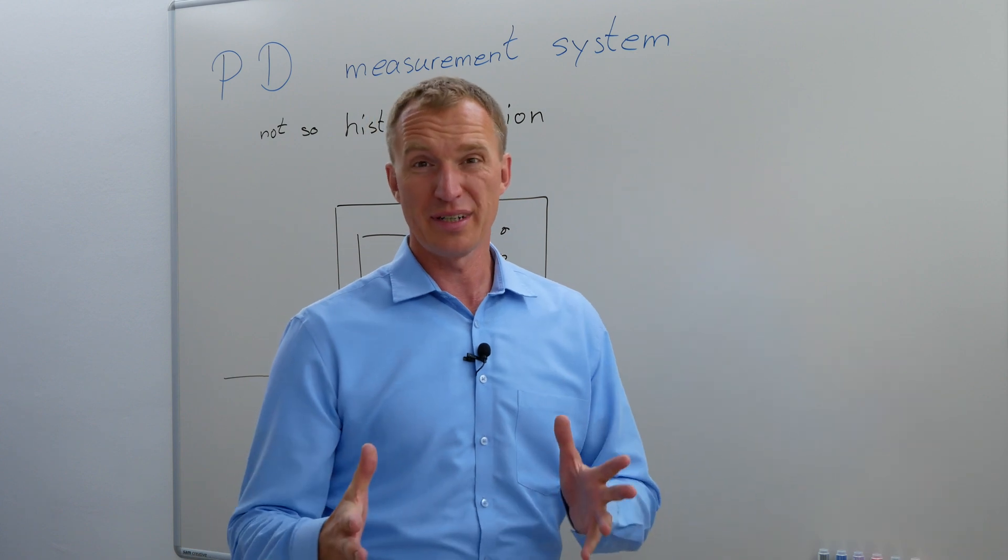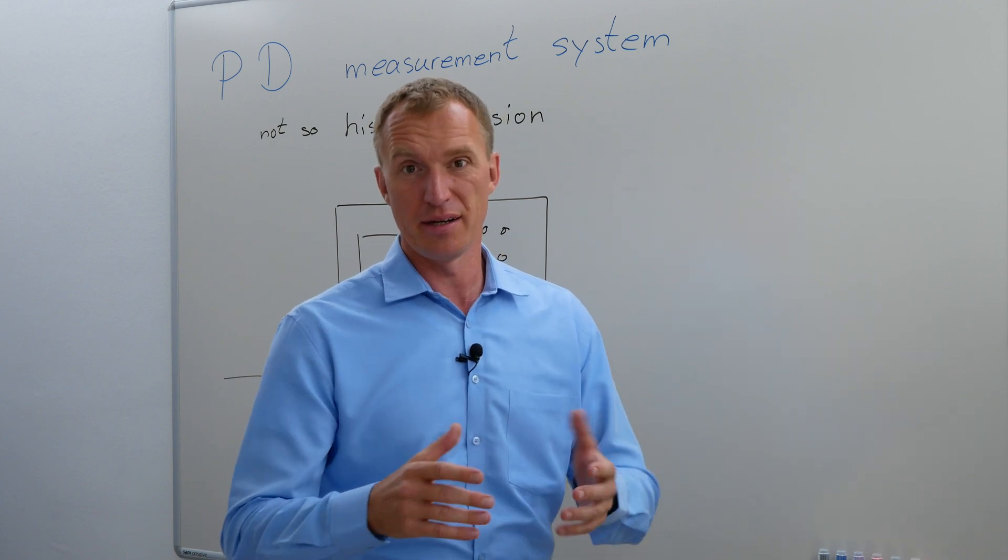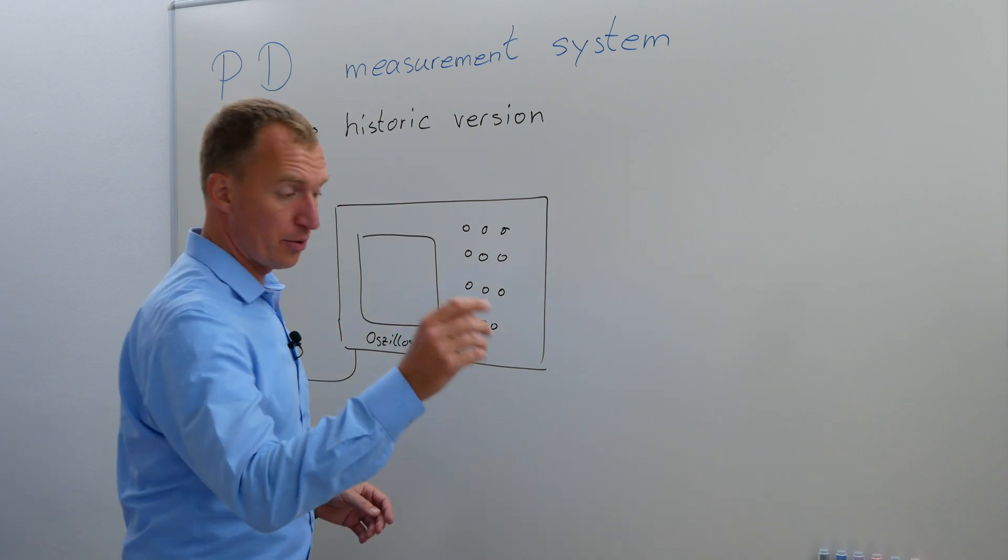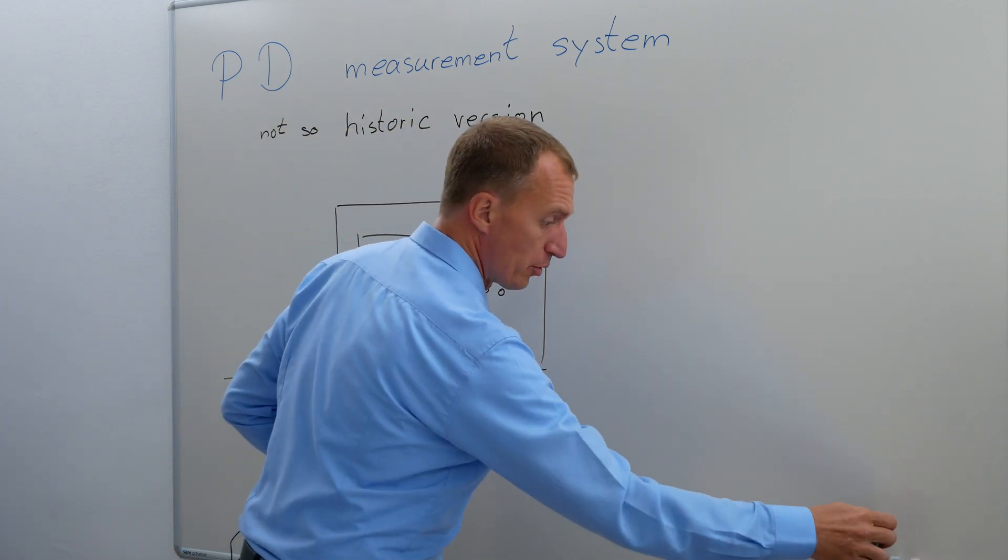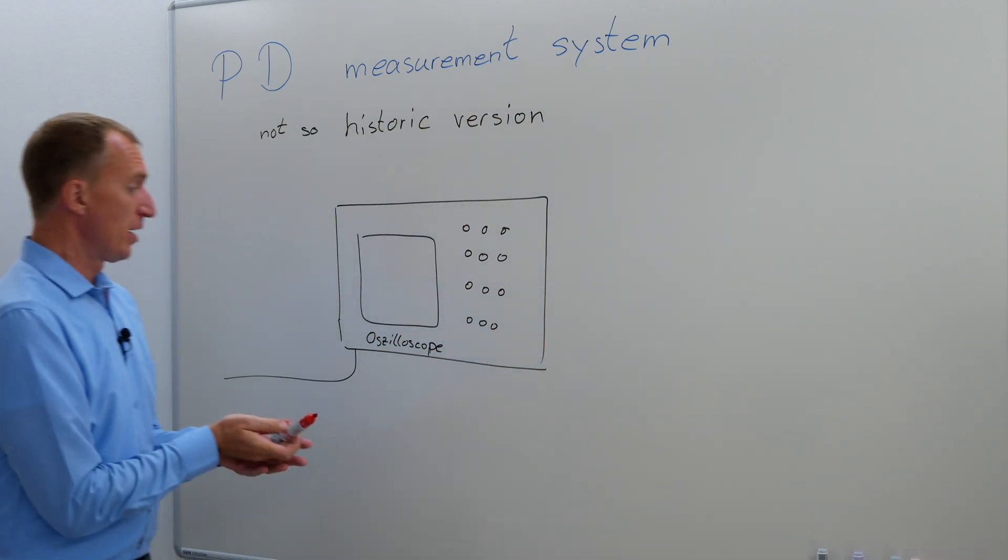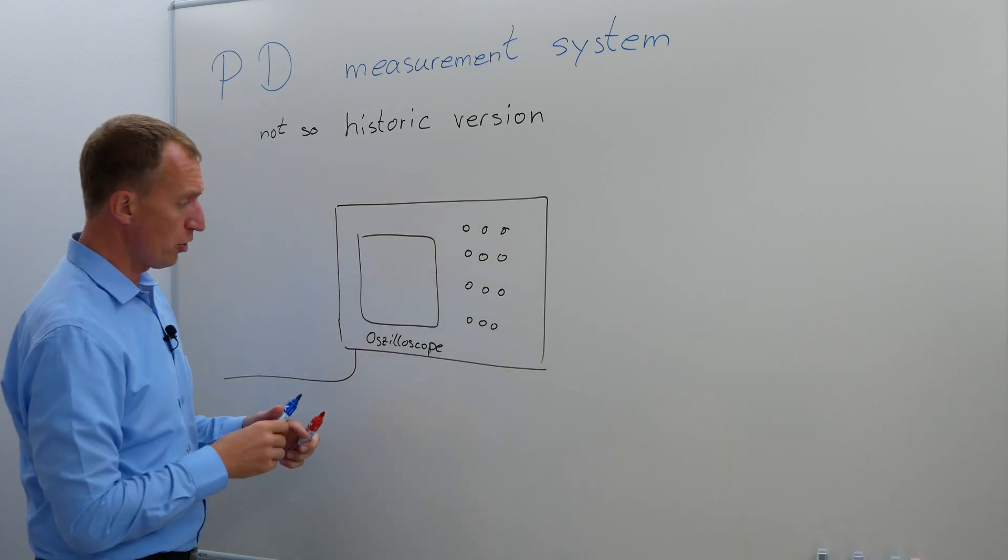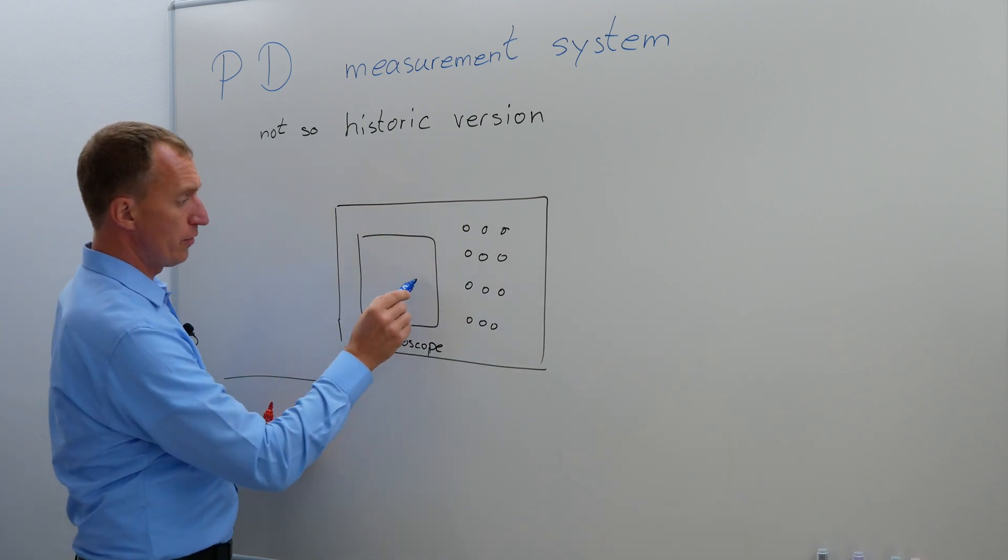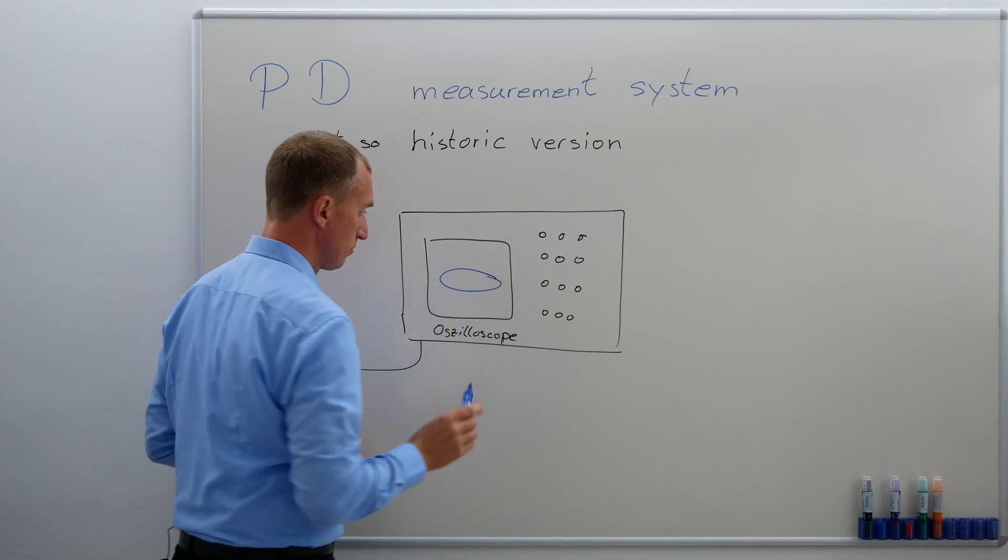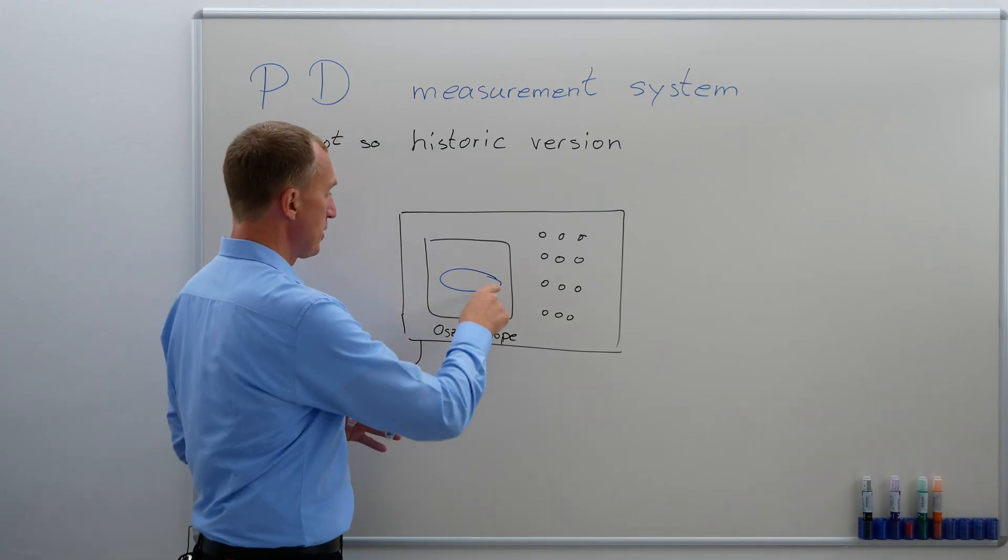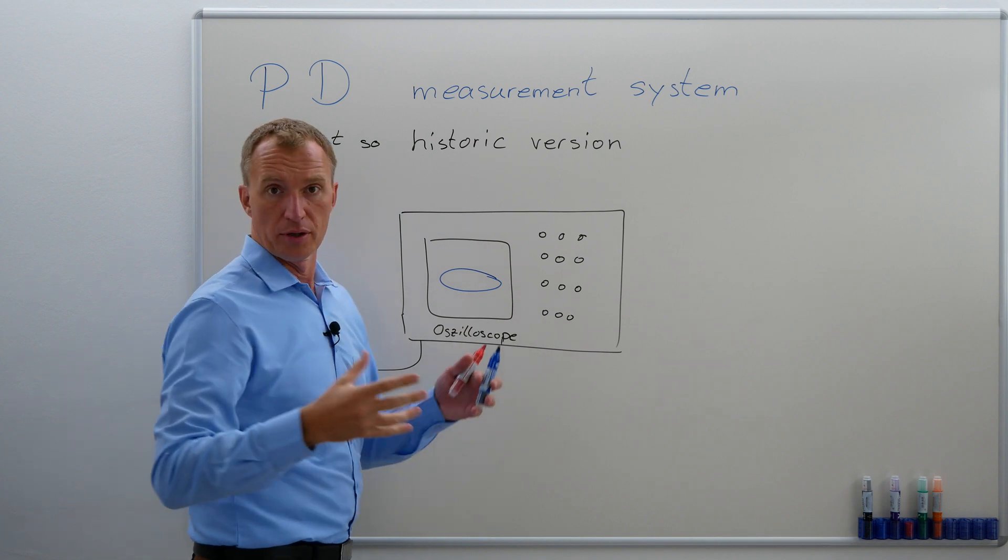Before we talk about the historic version, let's talk about an intermediate step, the not so historic version. Sorry, I forgot to mention that before. So in the not so historic version, we were using an oscilloscope, you know, old-style oscilloscope. And on the oscilloscope, we had one of these Lissajous figures, I can't really pronounce it, and this would represent our voltage.